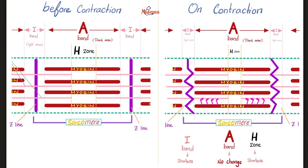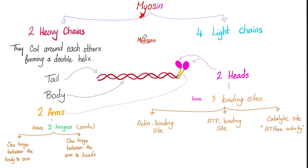When your muscle contracts, the I-band will shorten. The A-band will not change. The H-zone also shortens. The entire muscle shortens. Myosin, the thick filament, has two heavy chains and four light chains. Please pause and review.